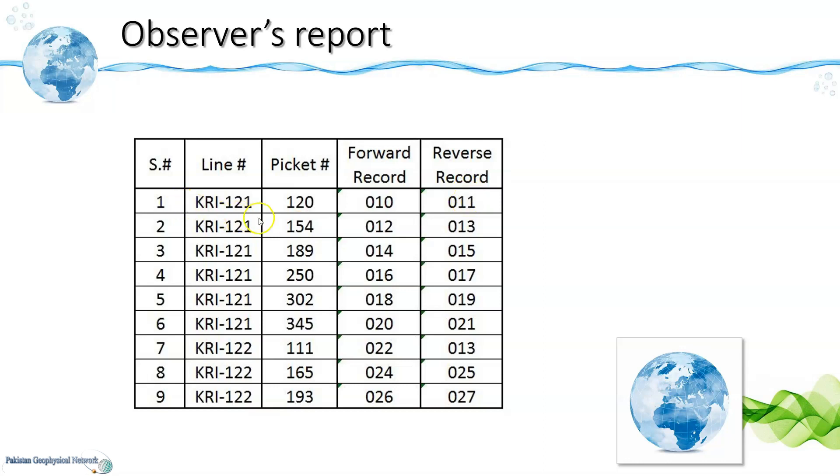Next we have done the forward reverse shooting on picket number 154 and now our forward and reverse record files are 012 and 013. In this way we will be having multiple forward reverse shooting pickets on this line.